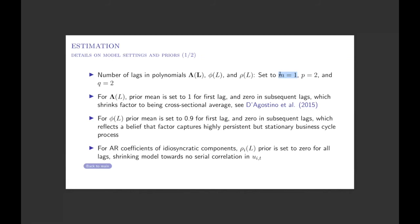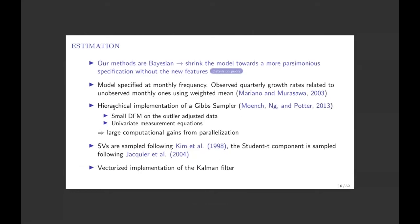If you put more than one lag on this polynomial, it is very important to have heavy shrinkage — centering the first lag at one and zero for subsequent lags, pushing towards the case where m equals zero. Without that, you can get pretty unstable estimates. In our experience, m equals one is enough to give you heterogeneous dynamics, and if you do more, you will shrink it anyway so it looks very much like m equals one — it doesn't add much value and complicates the model.